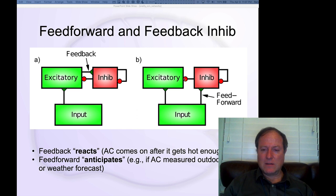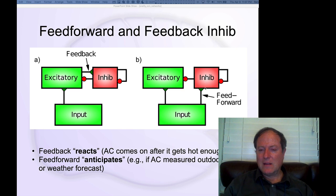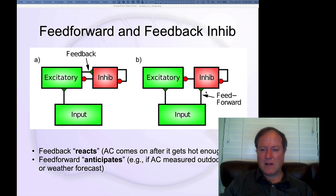In contrast, for feedforward inhibition, the inhibitory neurons are being driven by the inputs that are also projecting into the excitatory layer. The critical feature here is that it allows the inhibition to anticipate the incoming levels of excitation and send a proportional amount of inhibition that essentially anticipates the excitation those neurons are going to receive. This is like smart thermostats controlling AC units that look at the weather forecast and determine how much inhibition to drive as a function of what the actual temperature is outside.